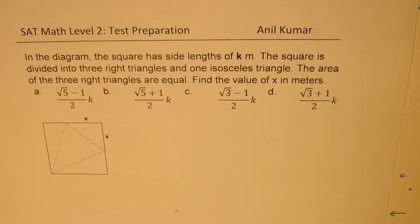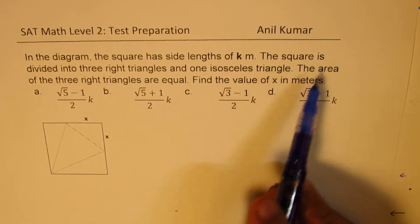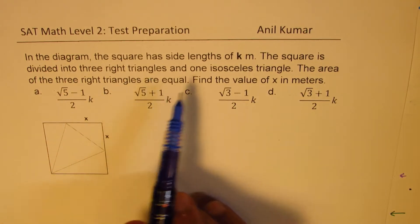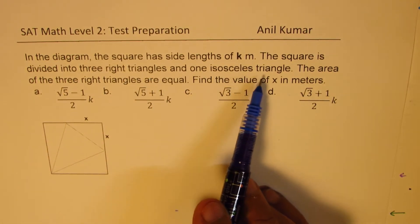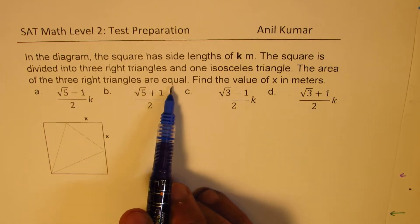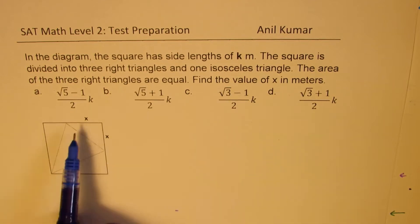In the diagram, the square has side lengths of k meters. The square is divided into three right triangles and one isosceles triangle. The area of the three right triangles are equal. Find the value of x in meters.